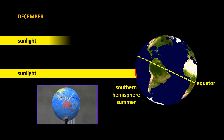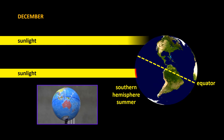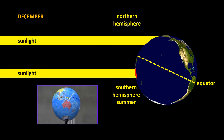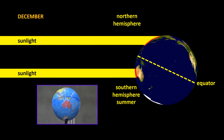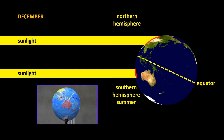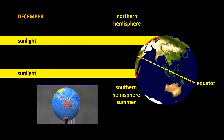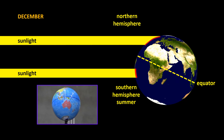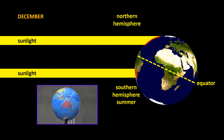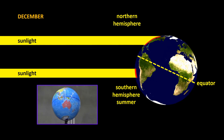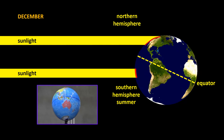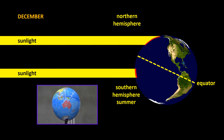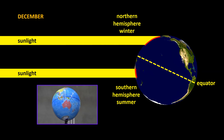An identical beam of light striking the Northern Hemisphere, at the same distance from the equator, hits at an angle such that the energy spreads out over a wider area. That part of the Earth therefore doesn't heat up as much. So in the Northern Hemisphere, it's winter.